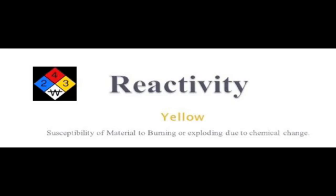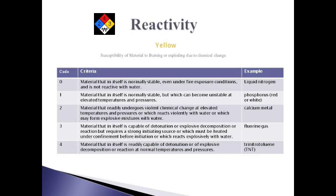Yellow is for reactivity. The concern is: will this material burn or explode when conditions of fire, heat, or water are present? Notice the example of liquid nitrogen — it has a code of 0, meaning it is a material that will be stable even in the presence of fire or water. Compare that to the highly reactive example of TNT, which has a code of 4.